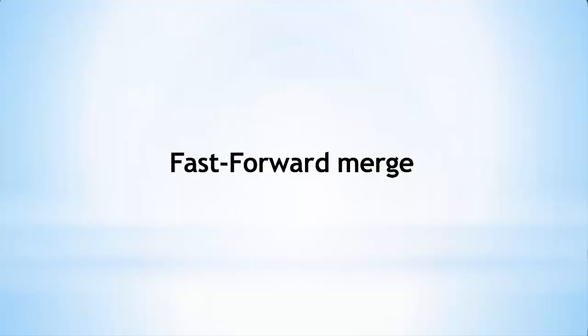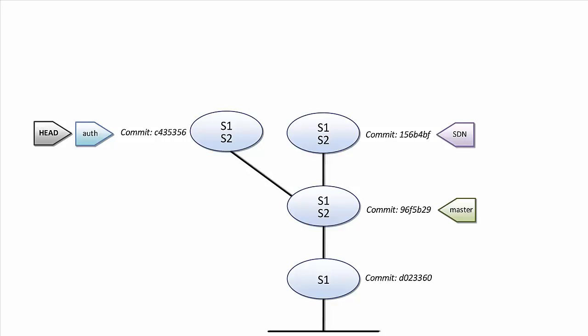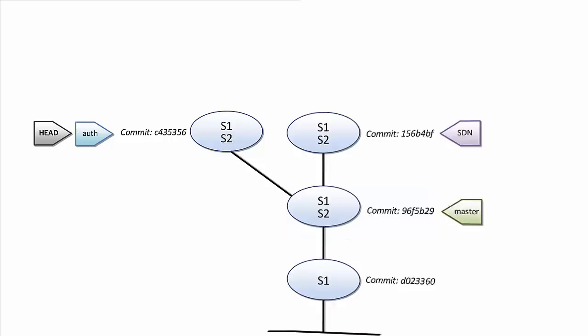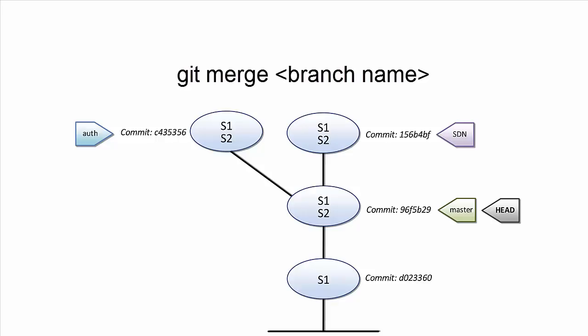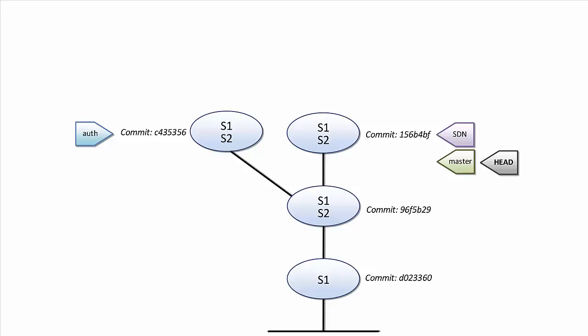We will talk about two types of merges: a fast-forward merge and a three-way merge. First, the fast-forward merge. We want to get the SDN controller config into our master branch. The SDN branch is pointing to that commit, and master is at its parent commit. Since there is a direct path from master to SDN, Git can perform a fast-forward merge — it simply moves the master branch to where SDN is. Even with multiple commits between branches, a direct path still means fast-forward. Let's do this now.